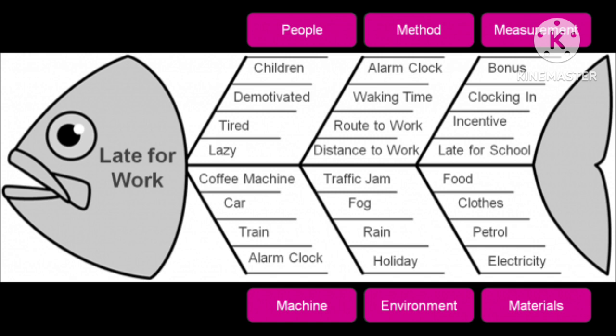Number five — Environment or weather conditions: rain, fog, traffic jams, and holidays can also affect the time taken by an employee to reach the office. Number six — Materials: basic materials like food, clothes, petrol, and electricity may cause late coming to office.